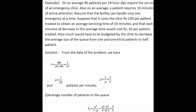On an average, 96 patients per 24-hour day require the service of an emergency clinic. Also on an average, a patient requires 10 minutes of active attention. Assume the facility can handle only one emergency at a time. It costs the clinic rupees 100 per patient treated to obtain an average servicing time of 10 minutes, and each minute of decrease in this average time would cost rupees 10 per patient treated. How much would have to be budgeted by the clinic to decrease the average size of the queue from 1 and 1 third patients to half a patient?